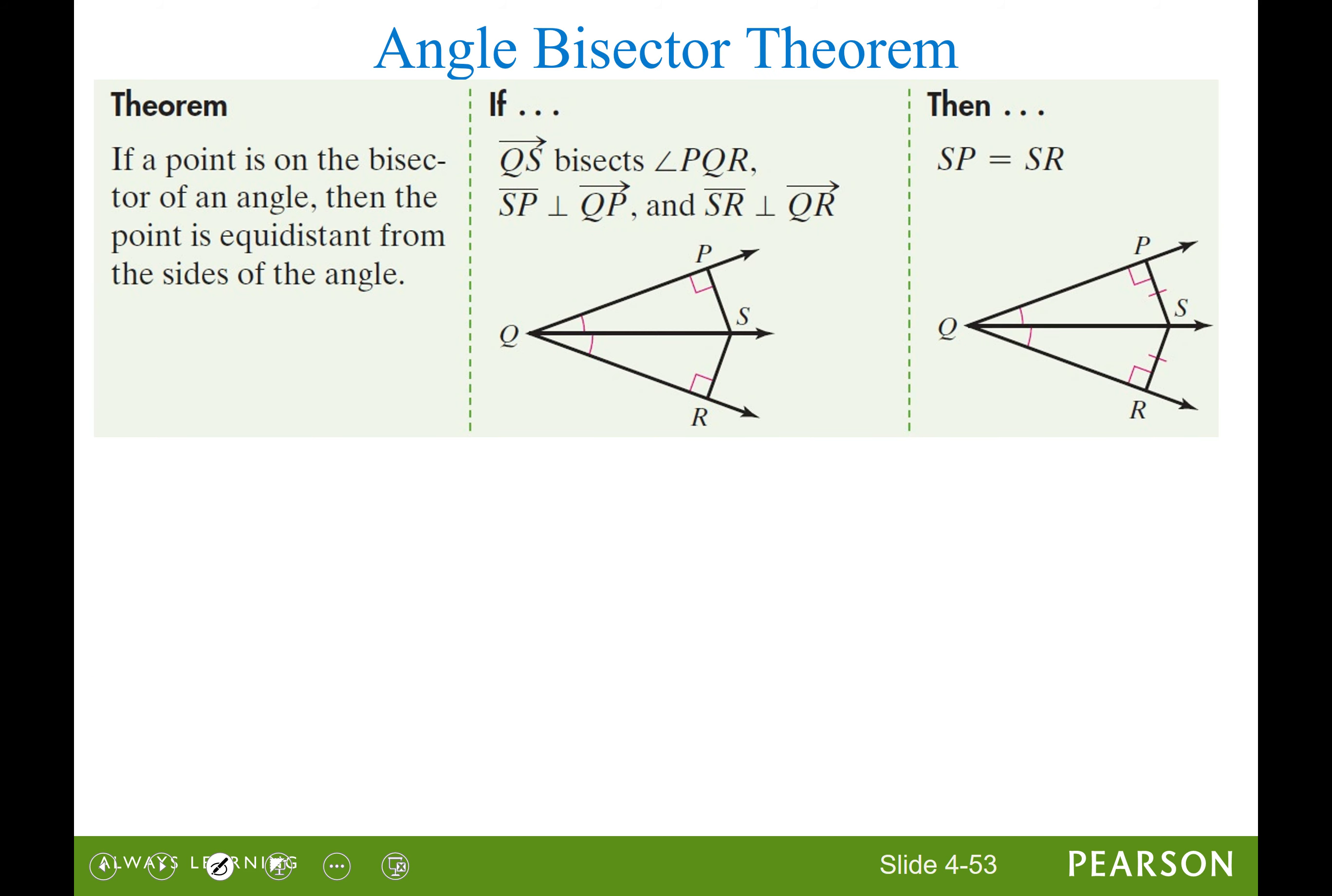The angle bisector theorem says that if ray QS does in fact bisect that angle, so if you have these single arch marks there, and if SP is perpendicular to PQ, that would give us this 90 degree marking, and if SR is perpendicular to QR, that would give us this 90 degree marking. So if we have all those markings, then the theorem, the angle bisector theorem, allows us to add this marking here, saying that the measure of segment SP is equal to the measure of segment SR.